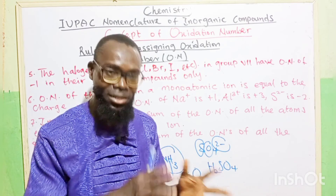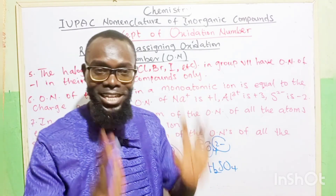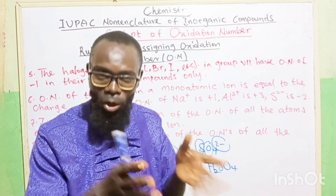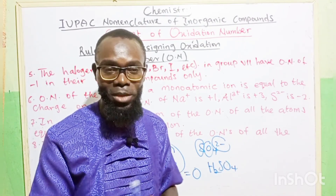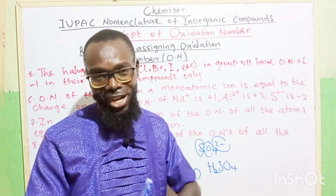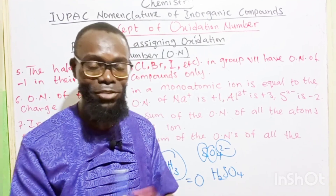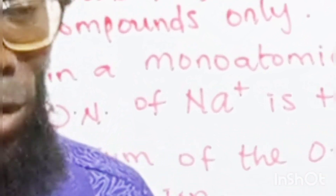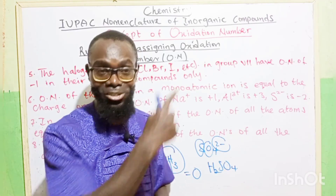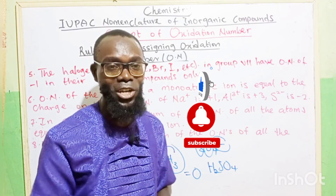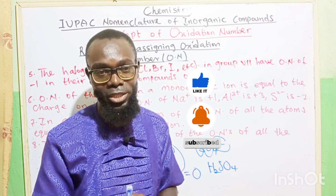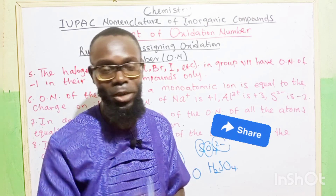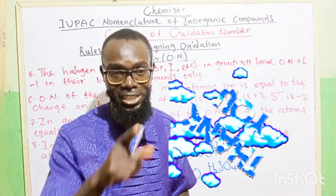In our next class, we are going to look at the application of oxidation numbers — how we can apply it in IUPAC nomenclature for naming inorganic compounds. I remain Latif Ismaila Akombi, your mathematics and chemistry tutor. If you have not subscribed to this channel, kindly do so and click the notification bell for my subsequent content. Also, do help share with other learners in order to benefit. Thank you very much. I'll see you in my next video.